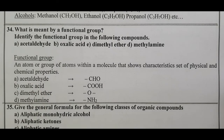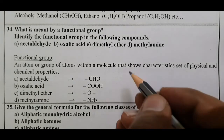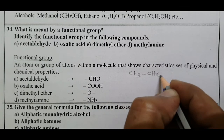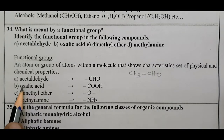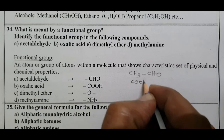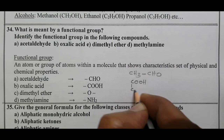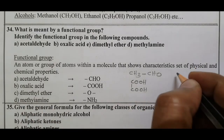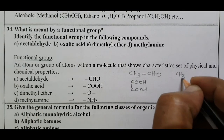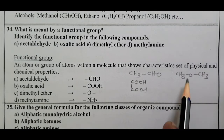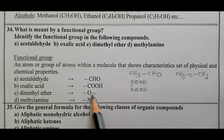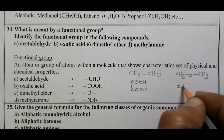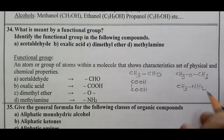Identify the functional group in the following compounds. Acetaldehyde has the molecular formula CH3CHO — the aldehyde group (CHO) is the functional group. Oxalic acid has the formula COOH-COOH; the functional group is COOH (carboxylic acid). Dimethyl ether is CH3-O-CH3; the functional group is the ethereal oxygen. Methylamine is CH3NH2; the functional group is the amine group (NH2).